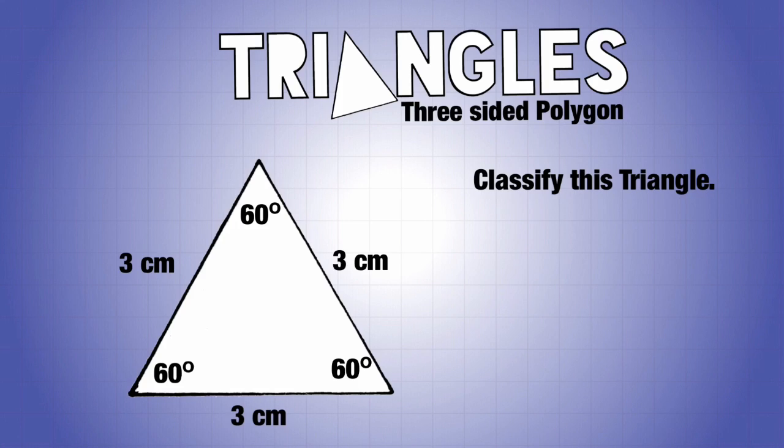Whenever you have an equilateral, it's always going to be acute because it's always going to have the same measures throughout: 60, 60, and 60 in every single equilateral triangle, no matter how you draw it, how big it is, or how small it is.